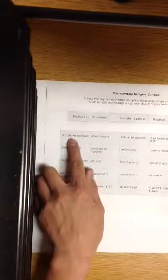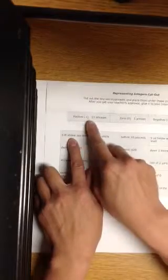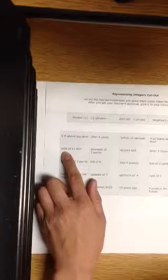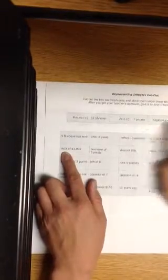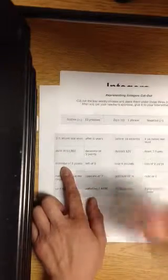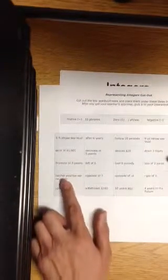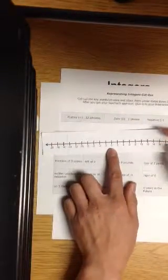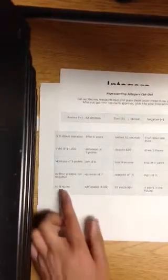For example: above is positive. A debt of a thousand dollars, debt means you owe money, must be negative. Increase, going up, is positive. Neither positive nor negative, isn't it right there in the middle? That's neutral, zero.